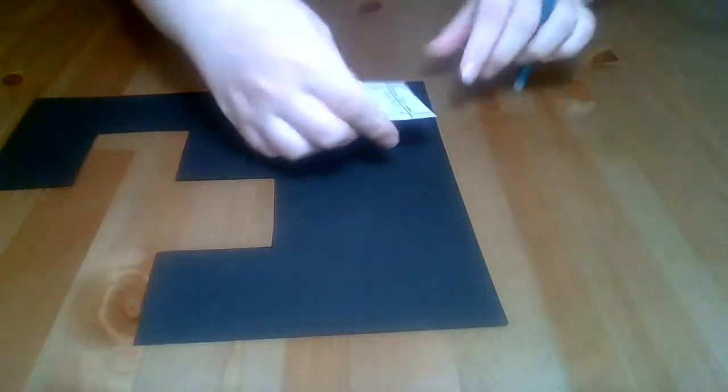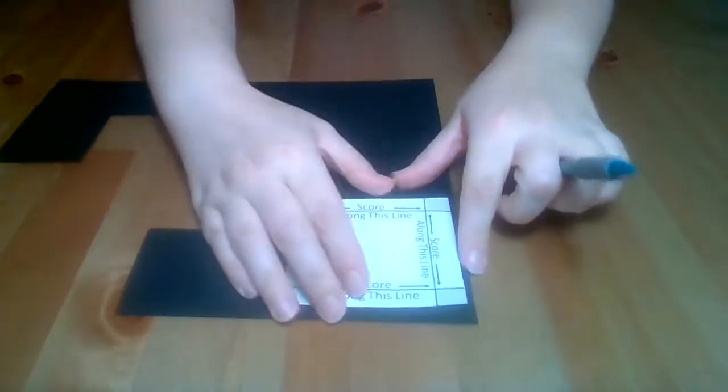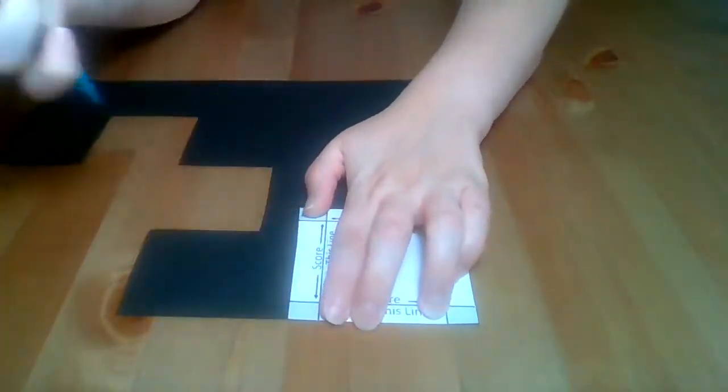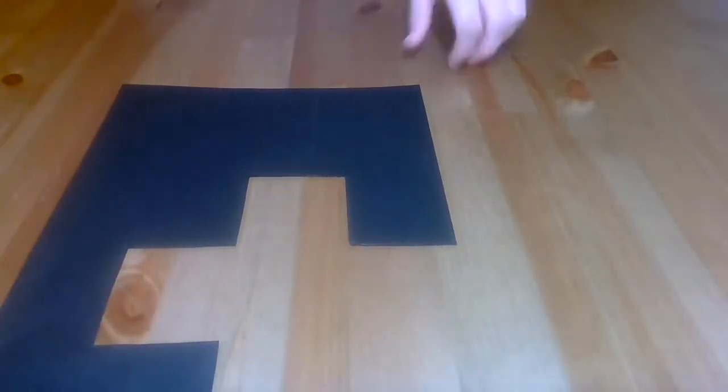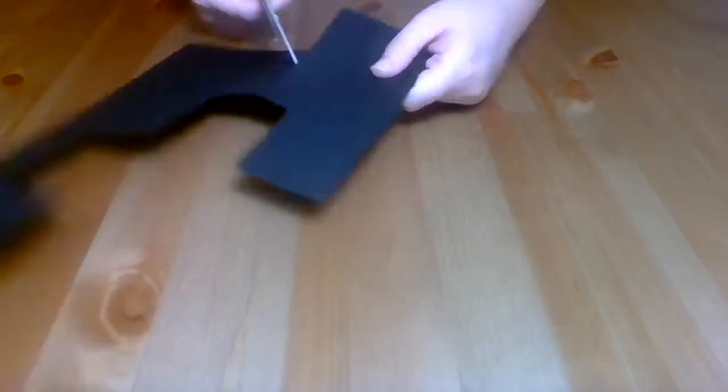The lid of the box is similar to the base but involves a few more cuts and glue. I'm going to stick with black for my lid, but feel free to use a color that is different than your base. Trace the lid template in the corner of your cardstock and cut out the lid.